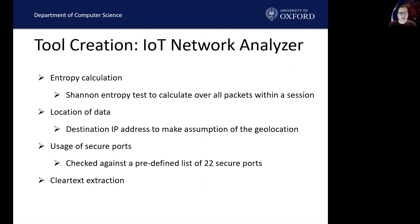For tool creation, although our results can be found using separate open source tools, it would require an investigator considerable time to manually extract the data. We developed a tool called IoT Network Analyzer, built in Python, to automate the process. The tool has four main features: entropy calculation to identify all sessions in clear text using a Shannon entropy test; data location extraction using source and destination IP addresses with geolocation; usage of secure ports, where a list of ports is checked against a predefined list of 22 secure ports; and finally, extraction of any clear text information found in network packets.